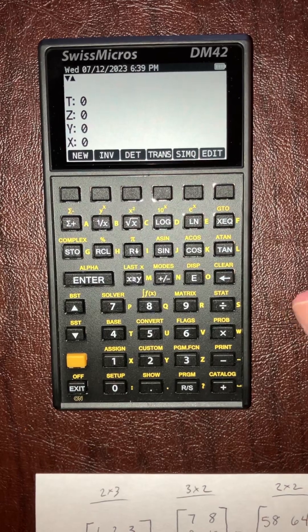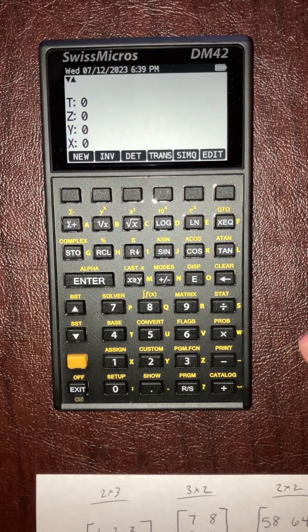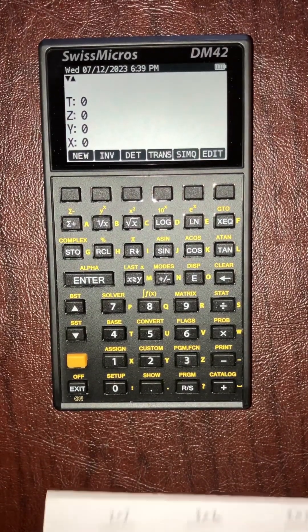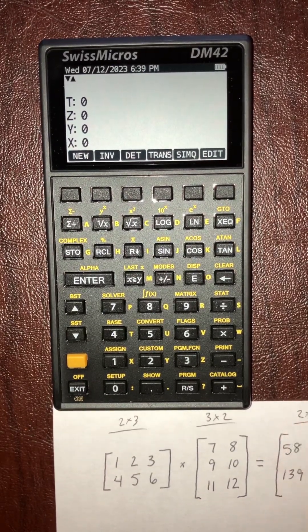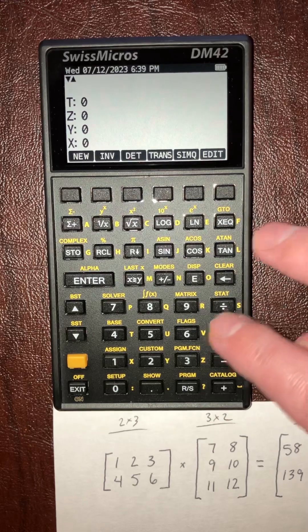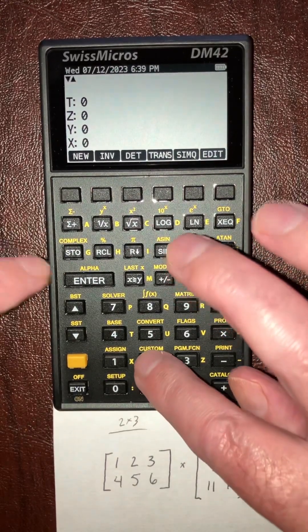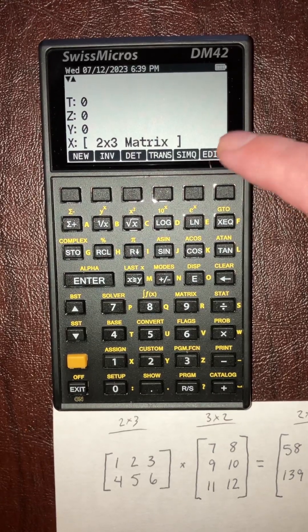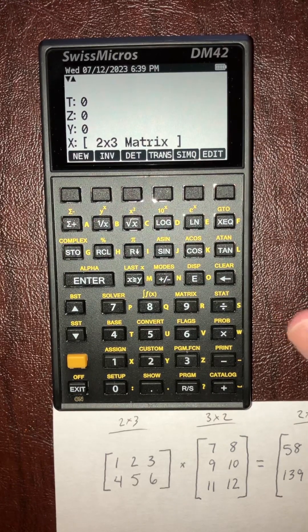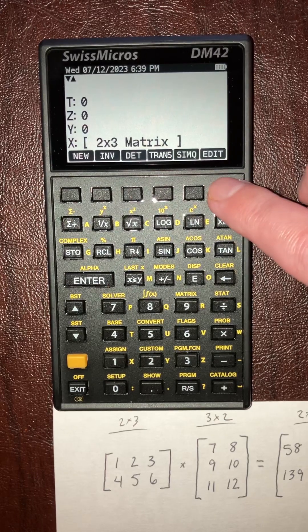So first you want to enter the matrix dimensions. Here I'll put that there for reference. This is a two by three matrix here. So two, enter, three, new. It reserves a matrix for you. Then you can do edit.